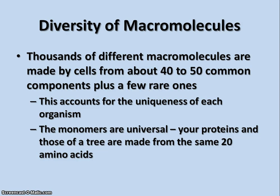There are thousands upon thousands of different macromolecules made by cells from a relatively small number of components — about 40 to 50 common components. Each organism is unique because each has its own set of molecules. The monomers, however, are universal — they're used in all living things. The proteins in your body are made of the same 20 amino acids as the proteins in a tree, a frog, or a bacterium. The same small pieces go together to make the larger molecules.